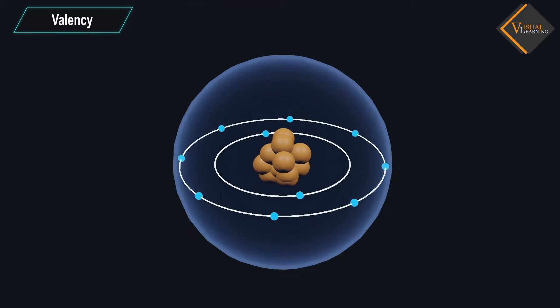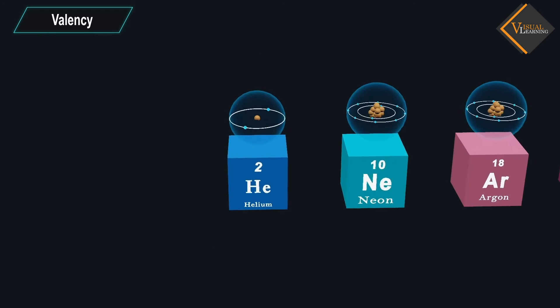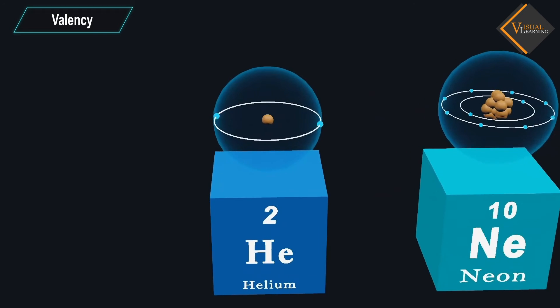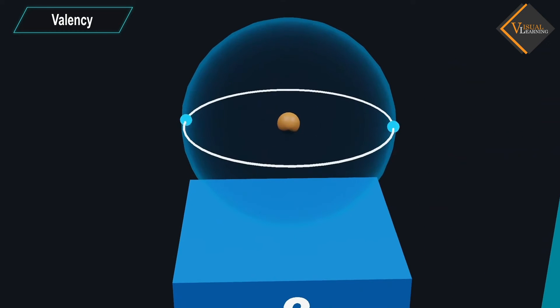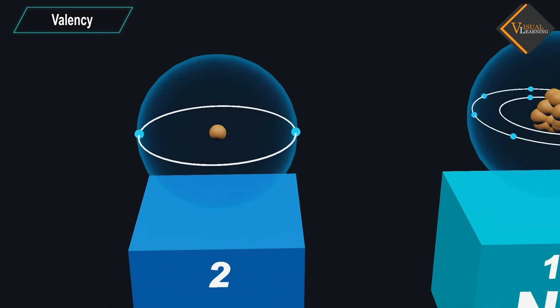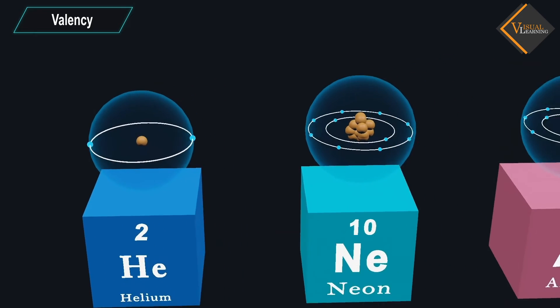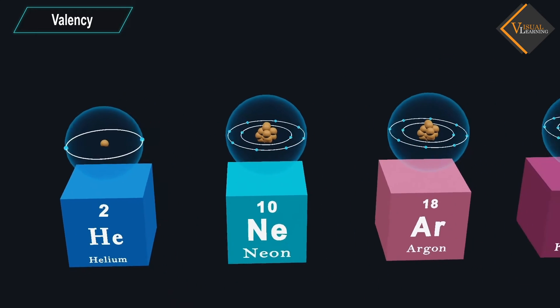Let us understand this by some examples. The helium atom has 2 electrons in its outermost shell, and all other elements have atoms with 8 electrons in the outermost shell.